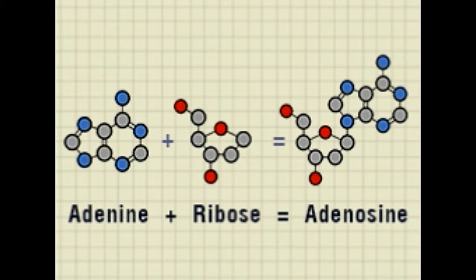To understand the distinct difference between these two molecules, one must first acquaint themselves with terms such as nucleobase, nucleoside, and nucleotide. All these terms refer to the various forms in which the DNA and RNA components occur in a cell. Nucleobases are nitrogen-containing aromatic compounds that are the basic building blocks of both nucleic acids. When a ribose sugar molecule is added to a nucleobase, it forms a nucleoside. The addition of phosphate groups to a nucleoside yields a nucleotide.